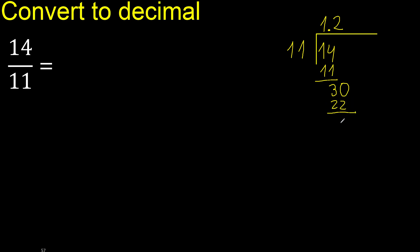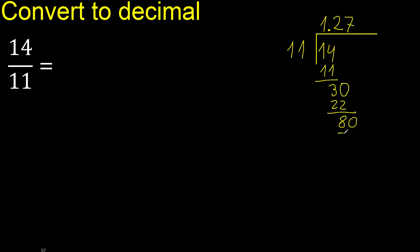Subtract — 30 minus 22 is 8. Always complete with 0. So 0, point — ok, 80. 11 multiplied by 7 is 77, which is not greater — ok. Subtract — 80 minus 77 is 3. Always complete with 0. So 30.